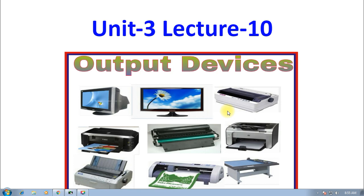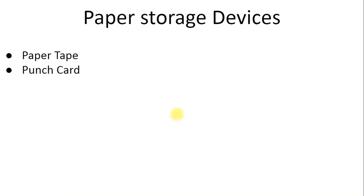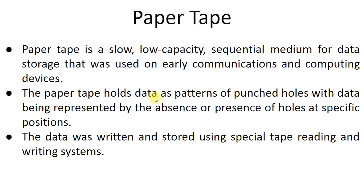So let's do that. First one, there are two types of paper storage devices: paper tape and punch card. First we will learn about paper tape. Paper tape is a slow, low capacity, sequential medium of data storage that was used on early communications and computing devices, starting from around the 19th century. Paper tape is the oldest storage device, and data is stored sequentially. The tape width is around 2 to 3 inches.